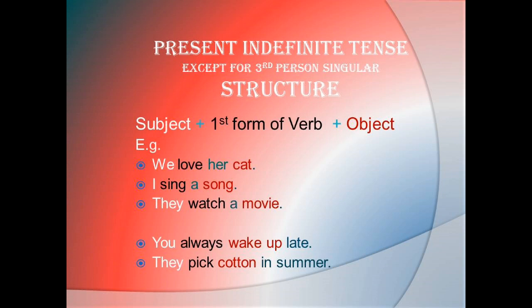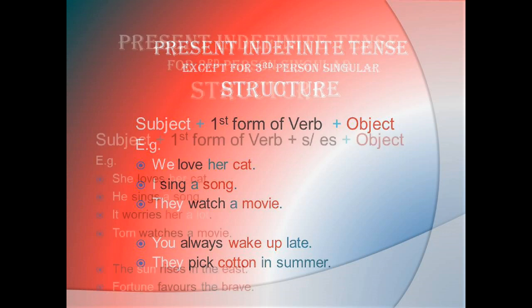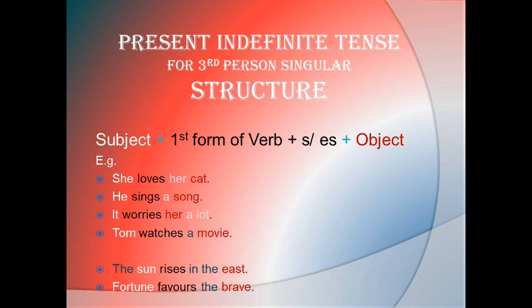For example: We love her cat. I sing a song — these are first person. They watch a movie — third person plural. You always wake up late — second person. They pick cotton in summer — third person plural. The structure for third person singular is: Subject plus first form of verb plus s or es plus object. It means when using first form of verb, we should add s or es.